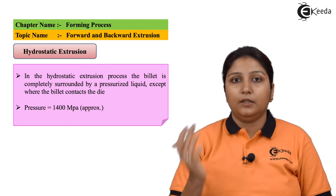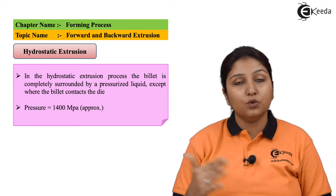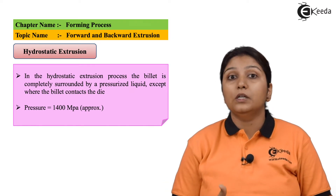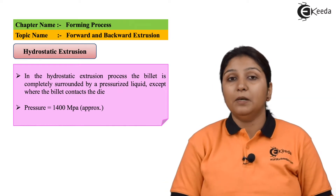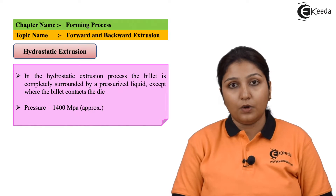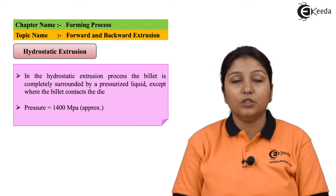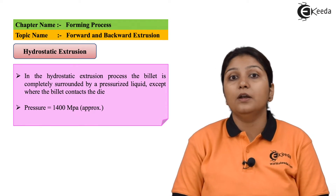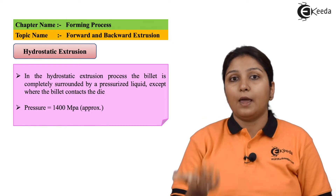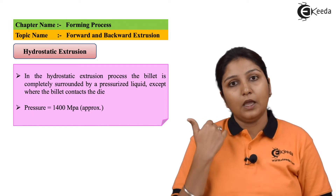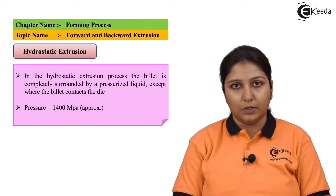In hydrostatic extrusion, the name is hydrostatic so you need water. The billet is completely surrounded with pressurized liquid at approximately 1400 MPa pressure, and then ramming takes place and the extrusion process is carried out.